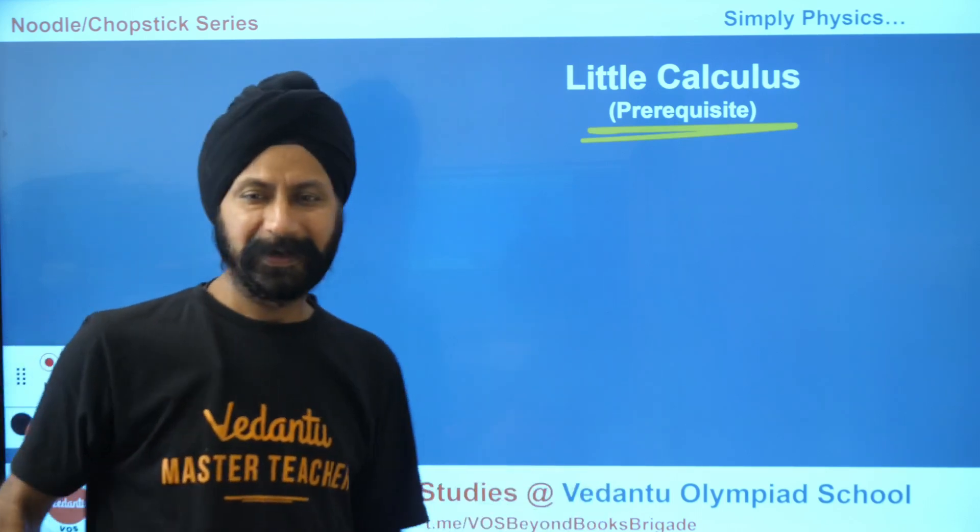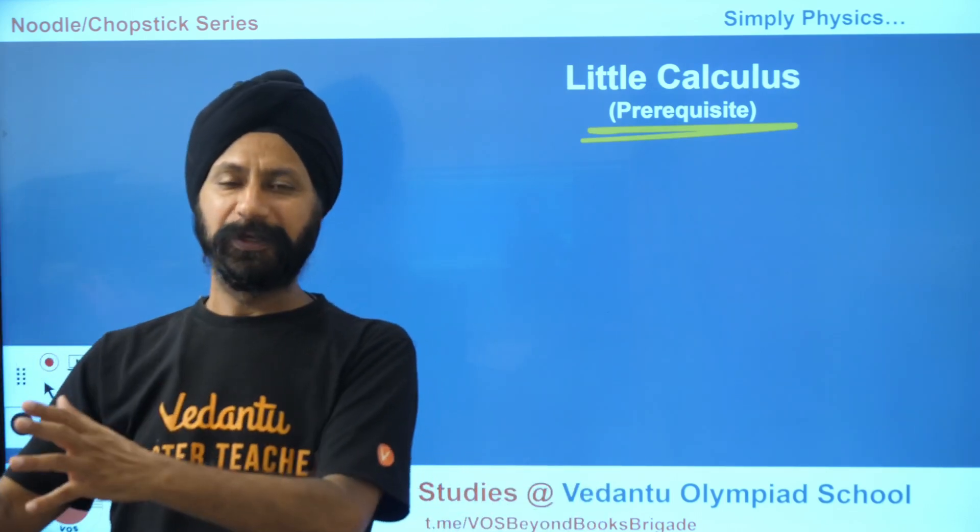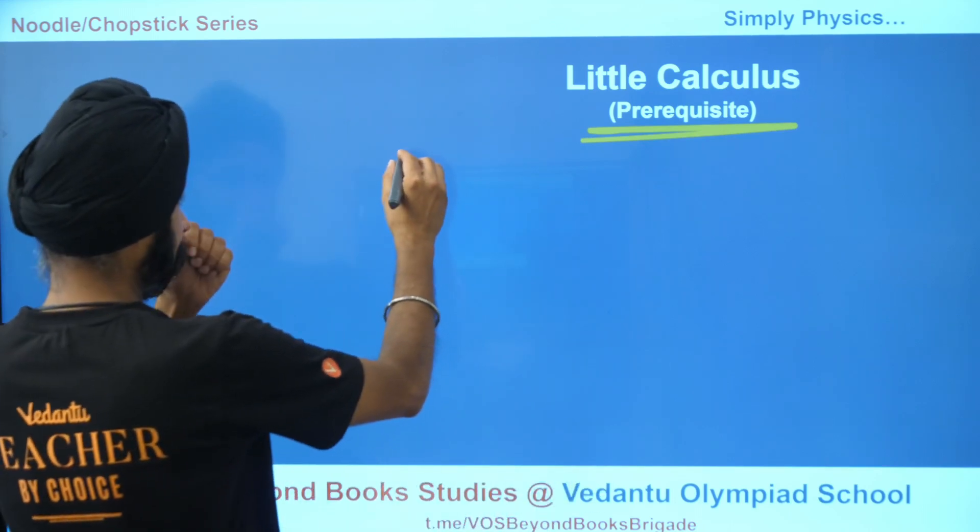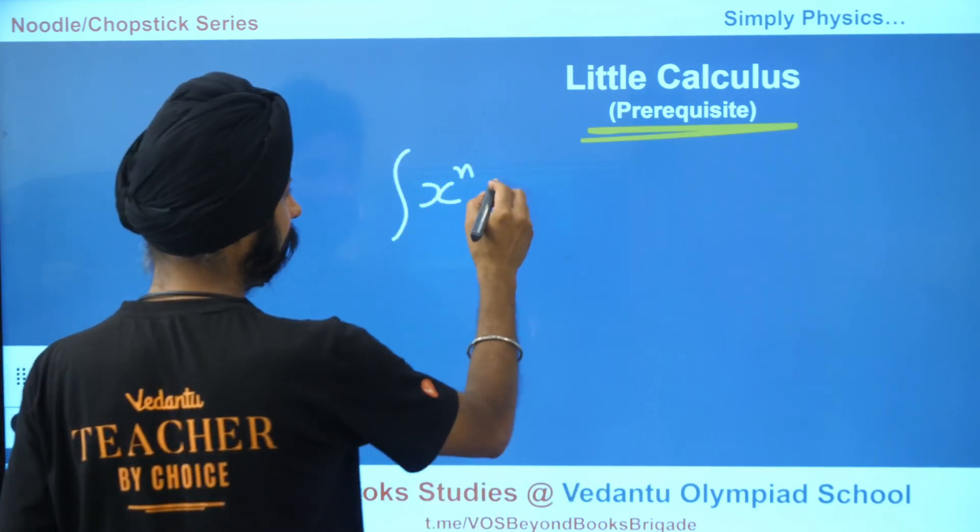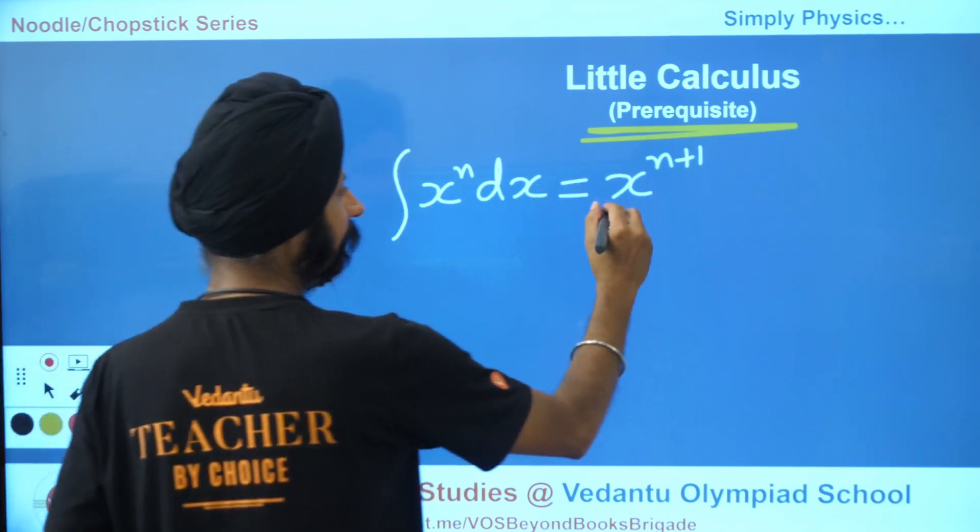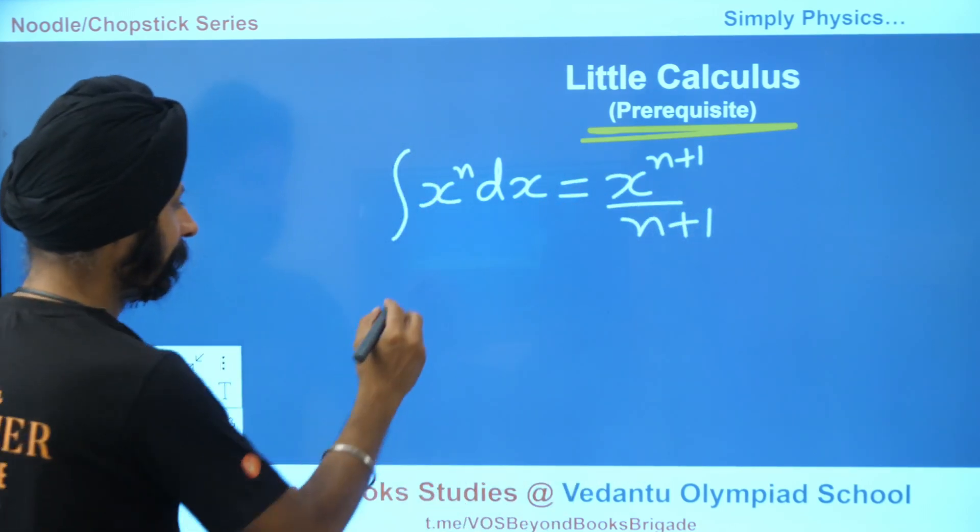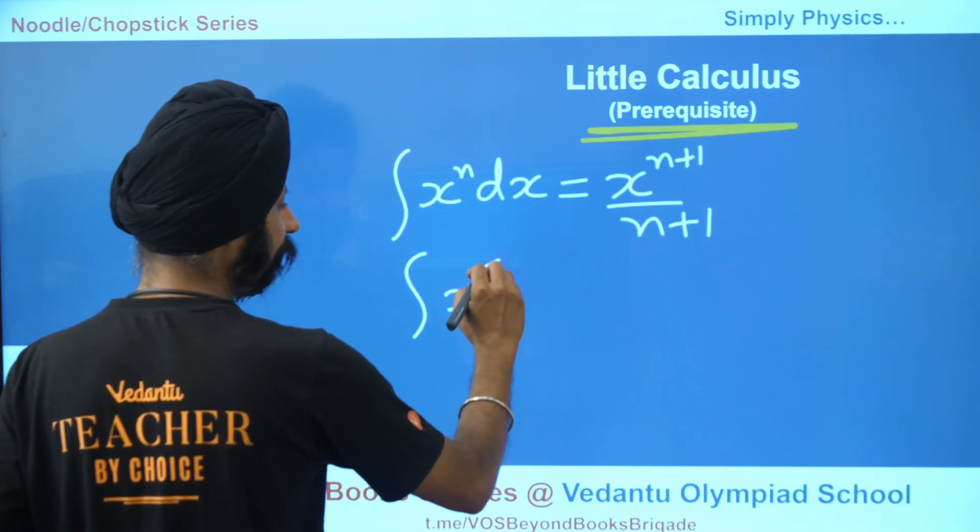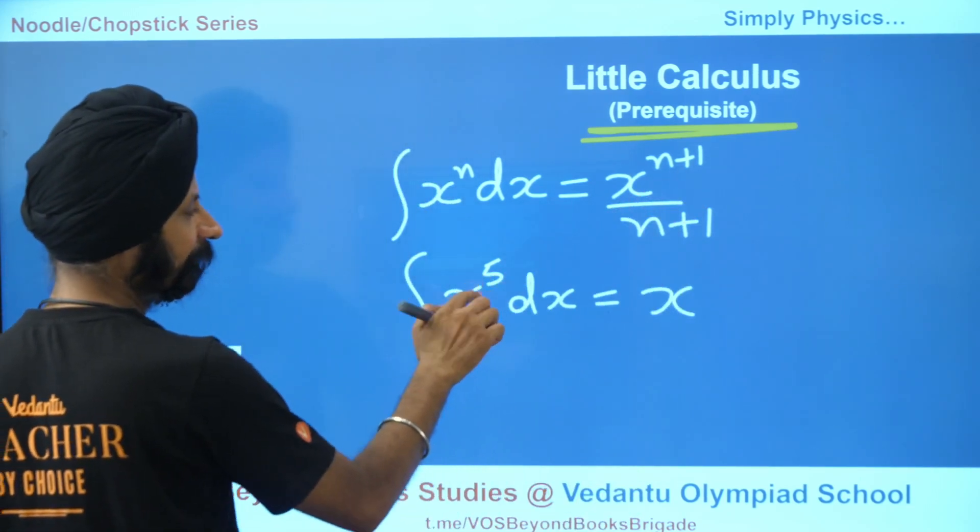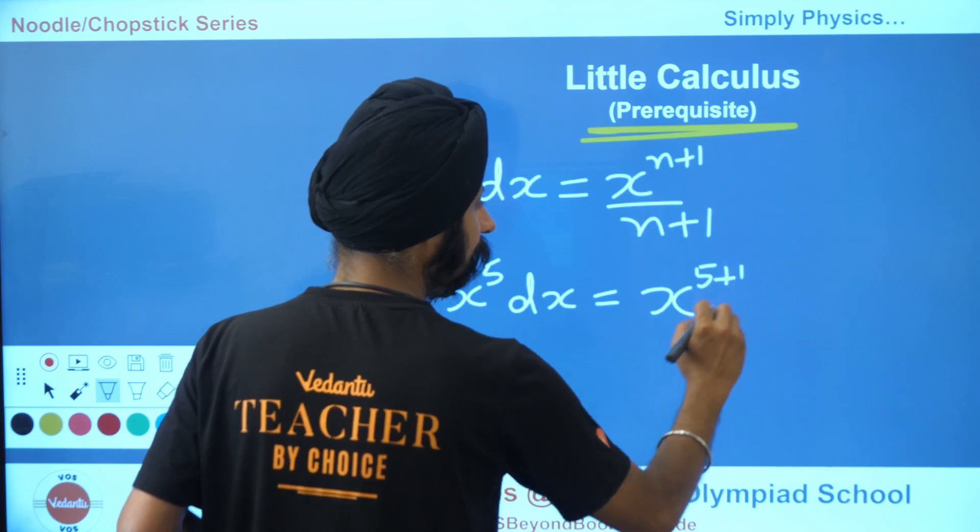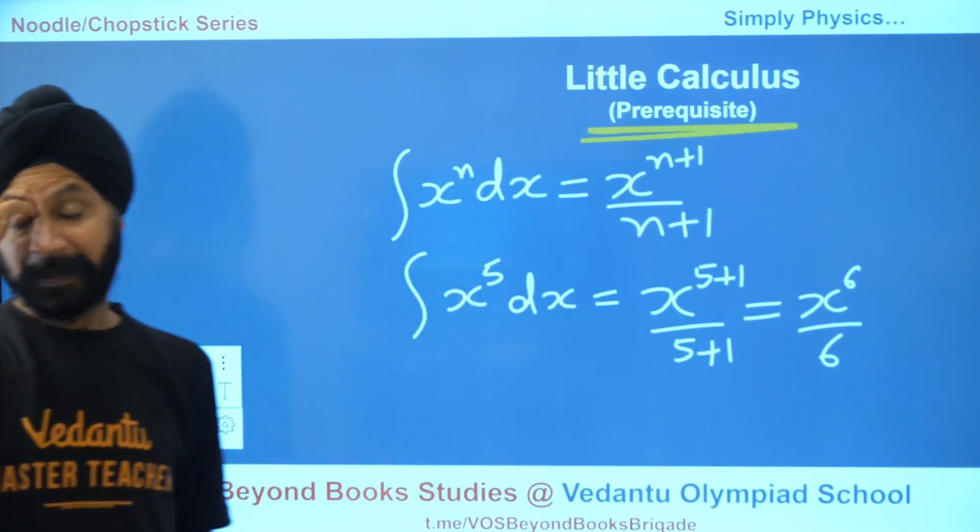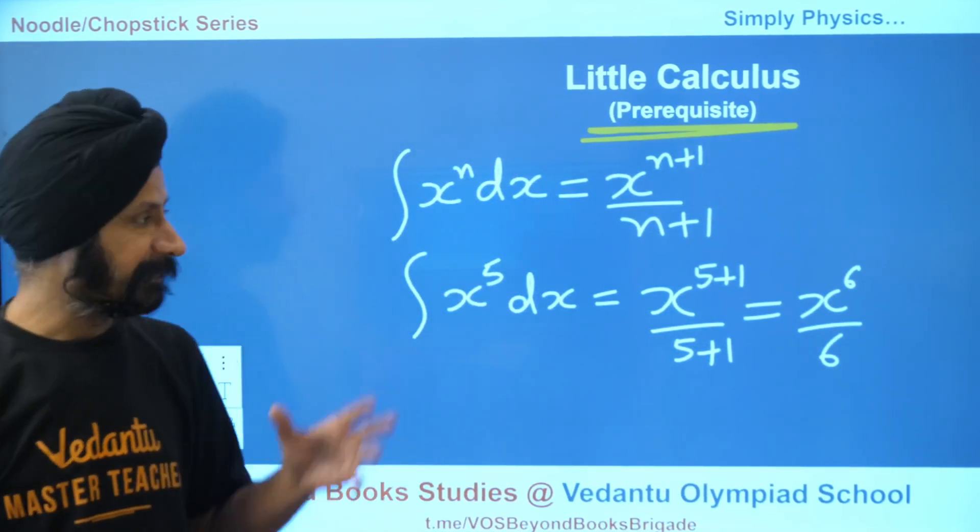To start with, let's do a little prerequisite. I'm not teaching you calculus - you have to refer to my other videos. This is just a refresher. If you have integration of x^n with respect to x, this equals x^(n+1)/(n+1). See how we increase the power and then divide by this. For example, x^5 becomes x^6/6. Just a quick refresh. If you have not done calculus, refer to those videos.